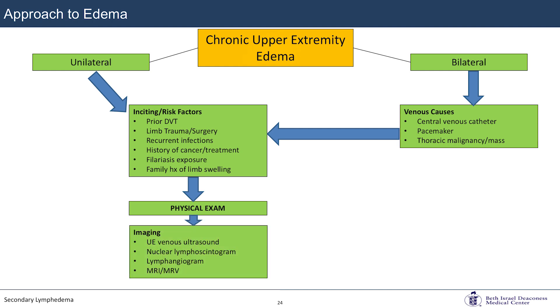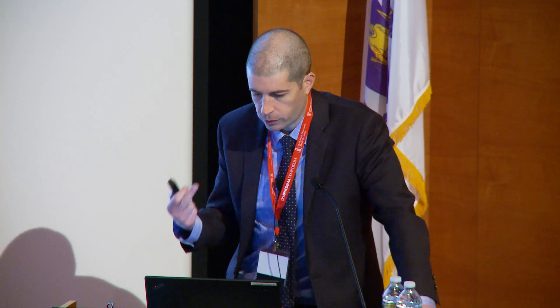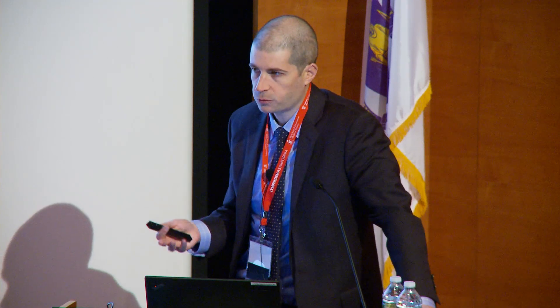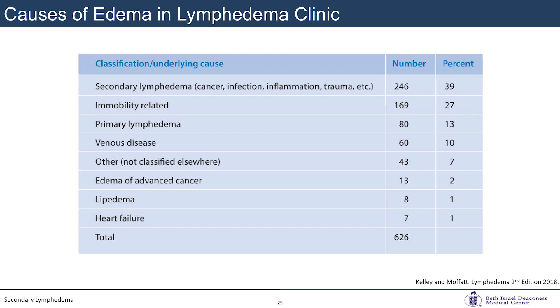To reiterate the point that many patients walking through the door do not have lymphedema: data from a UK lymphedema clinic showed that about 39% had secondary lymphedema, about 13% had primary lymphedema, and the remaining — just under half — had some other problem driving their edema.